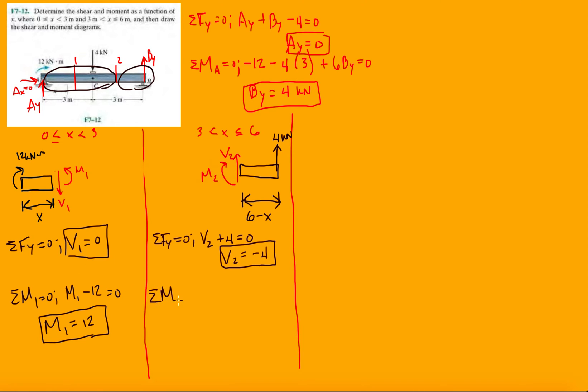For M2, we have M2 acting in the clockwise direction, so minus M2, and then we have this 4 kilonewtons force acting counterclockwise, so it's going to be 4 times (6 minus X) equals 0. So M2 equals 4(6 minus X), which will be 24 minus 4X. And we check the derivative of M2 with respect to X, and make sure that it does match up to negative 4, and it does.